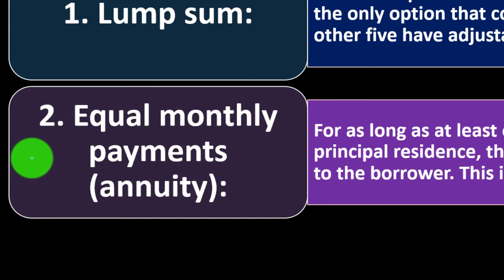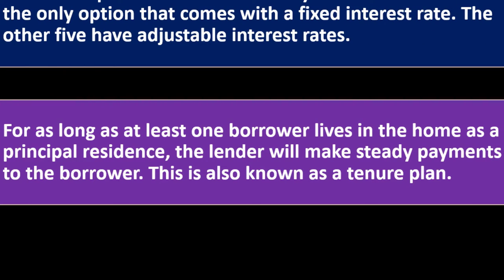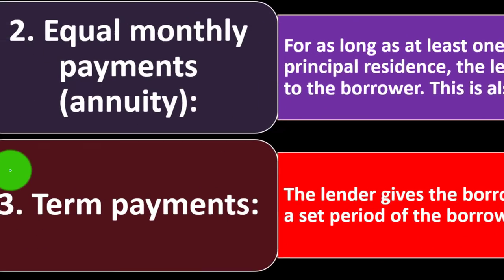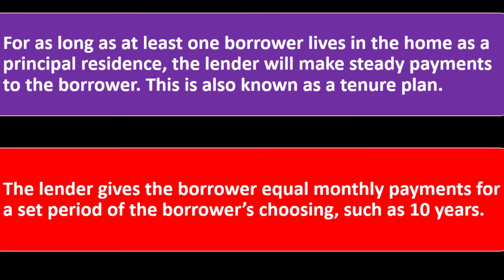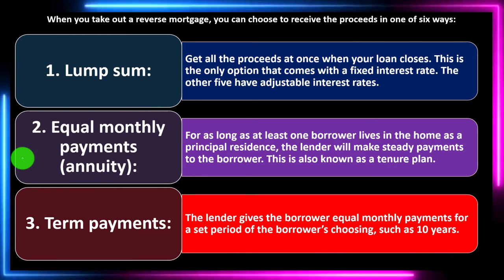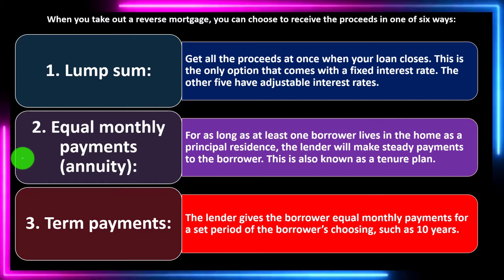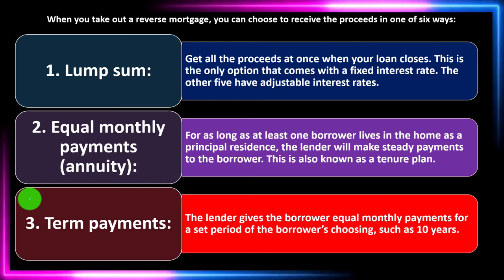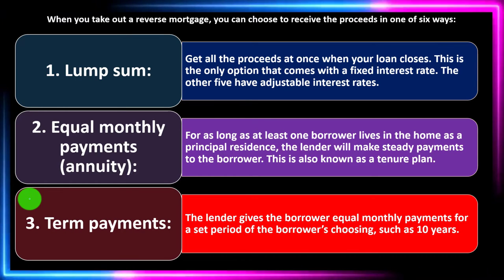Number two: equal monthly payments, also known as an annuity. For as long as at least one borrower lives in the home as a principal residence, the lender will make steady payments to the borrower. This is also known as a tenure plan. Number three: term payments — the lender gives the borrower equal monthly payments for a set period of the borrower's choosing, such as 10 years. With term payments, you set the term, but you must consider what happens if you live past that term.